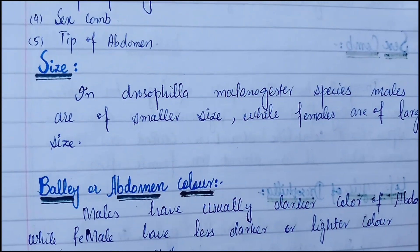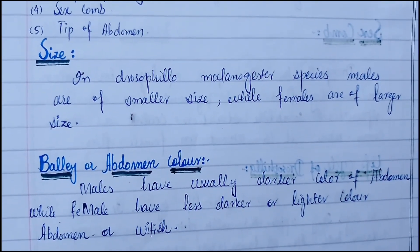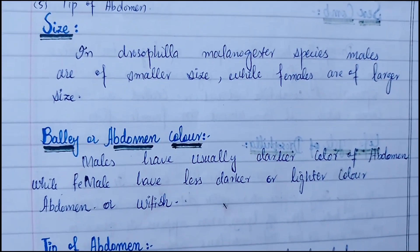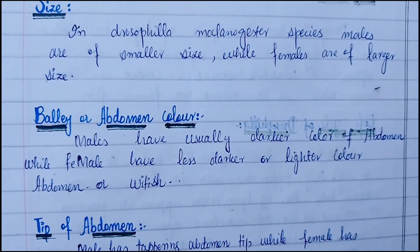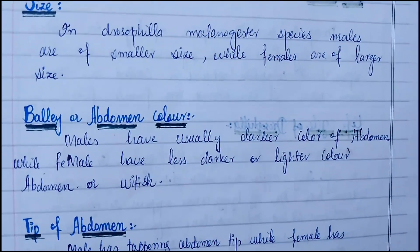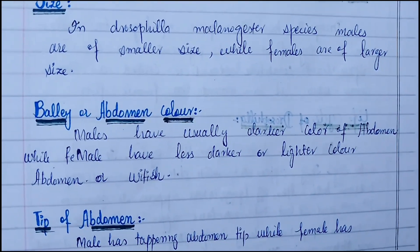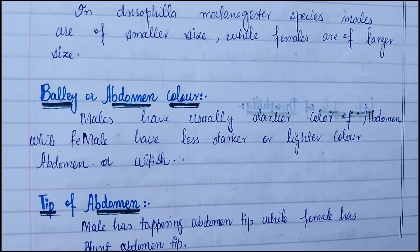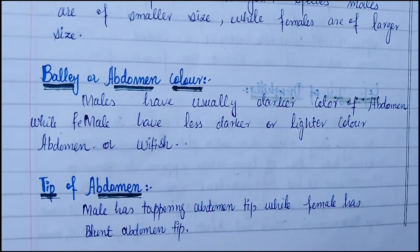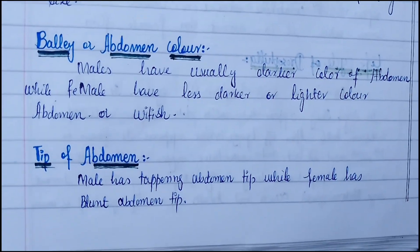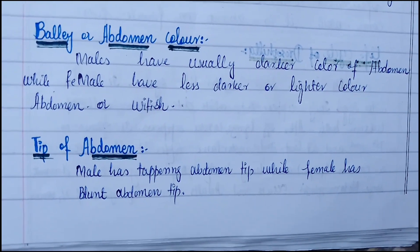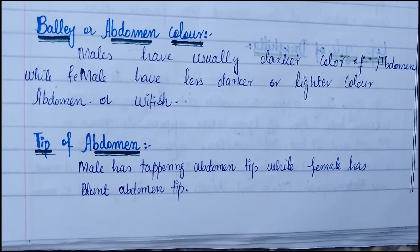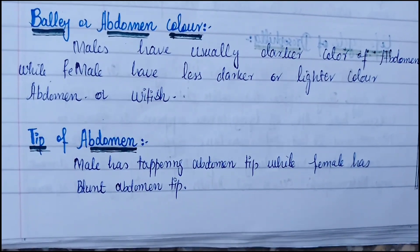Regarding size, in Drosophila melanogaster males are of smaller size while females are of larger size. Regarding belly or abdomen color, males usually have a darker color of abdomen while females have a lighter or whitish color of abdomen. Regarding the tip of abdomen, males have a tapering abdomen tip while females have a blunt abdomen tip.